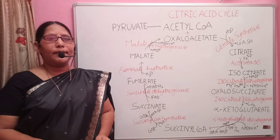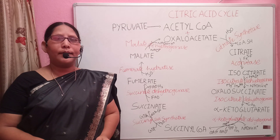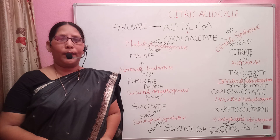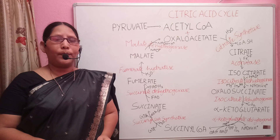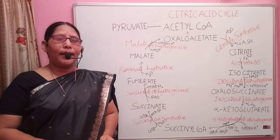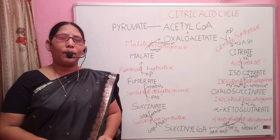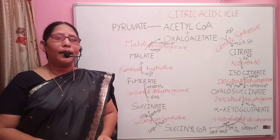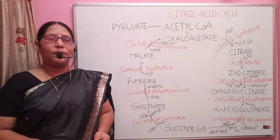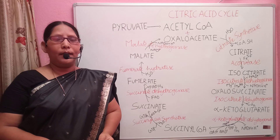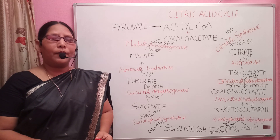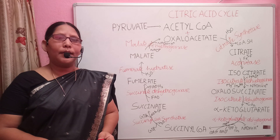Glucose is oxidized to pyruvate, and pyruvate is oxidized to acetyl coenzyme A. Acetyl coenzyme A is the link between two pathways: the glycolysis pathway and the TCA cycle pathway. The glycolysis pathway can be both an anaerobic and an aerobic pathway, whereas the Krebs cycle is strictly an aerobic pathway. In the absence of oxygen, there is total or partial inhibition of the TCA cycle.